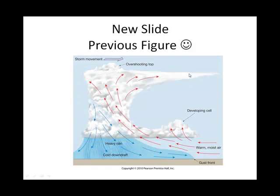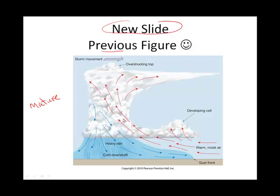I pulled another fast one on you — this is actually a slide you had previously, but I went ahead and inserted it here again because the next topic I want to talk about is related to the downdraft. I wanted to remind you that this has to be a thunderstorm cell that's in its mature stage. We know that because it has both an updraft — the red here — and a downdraft — the blue here. And associated with the downdraft, of course, is this precipitation.